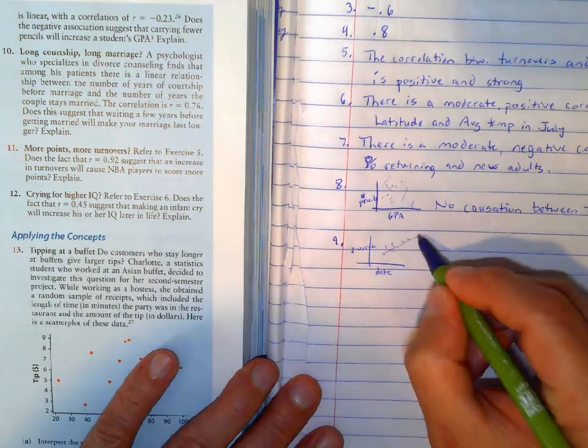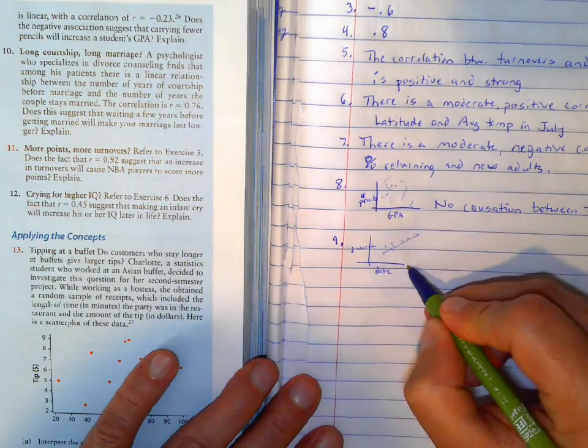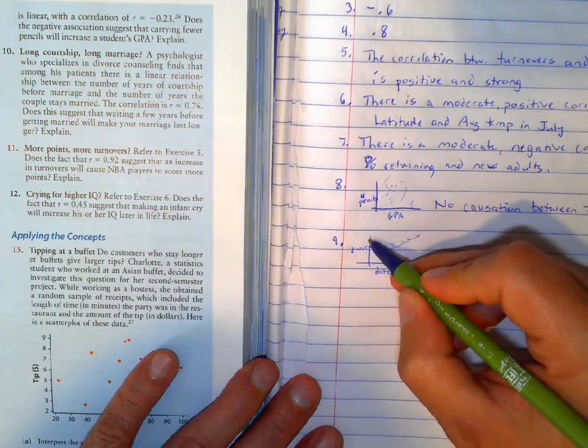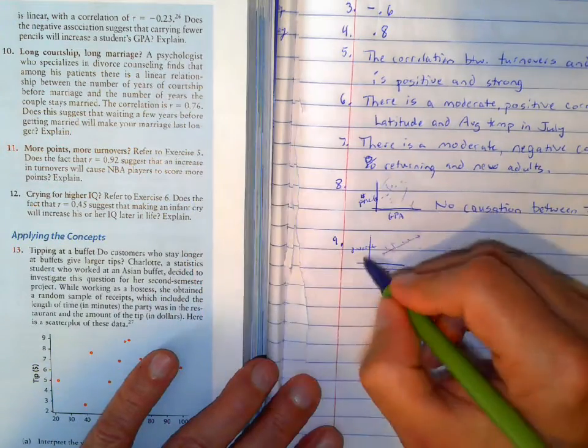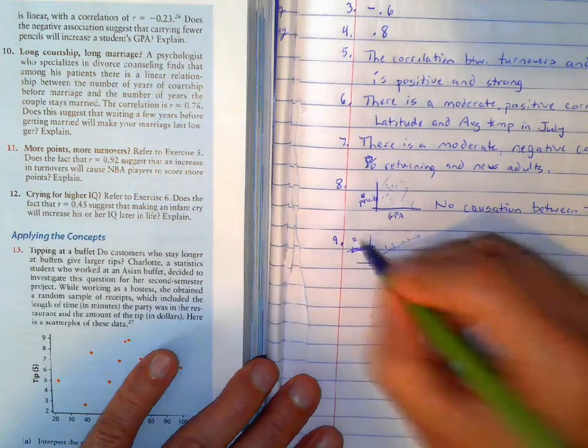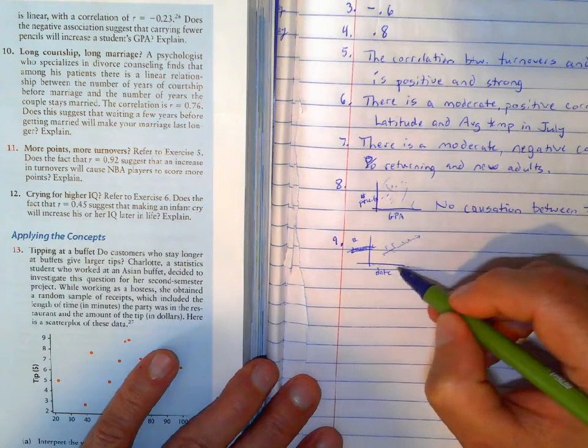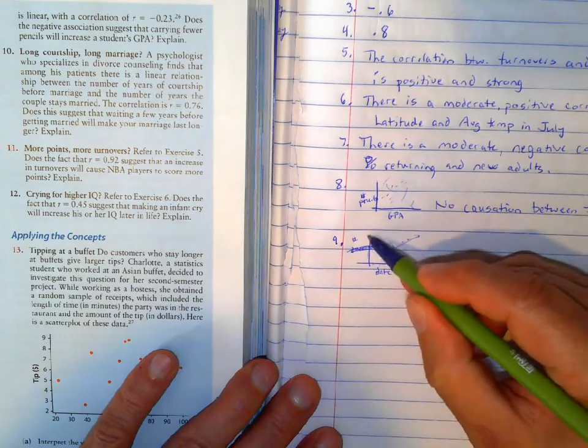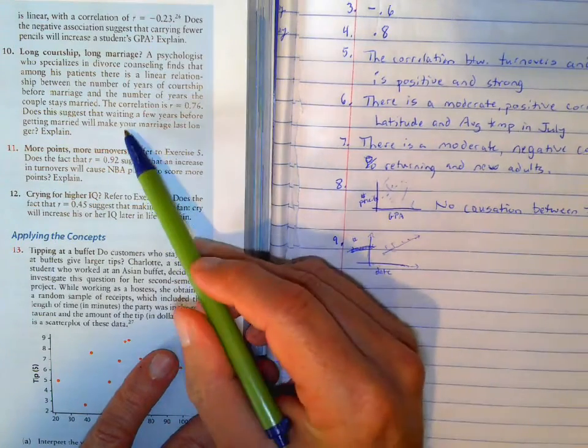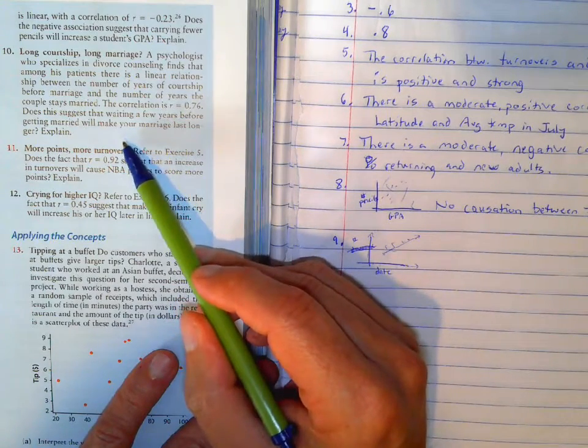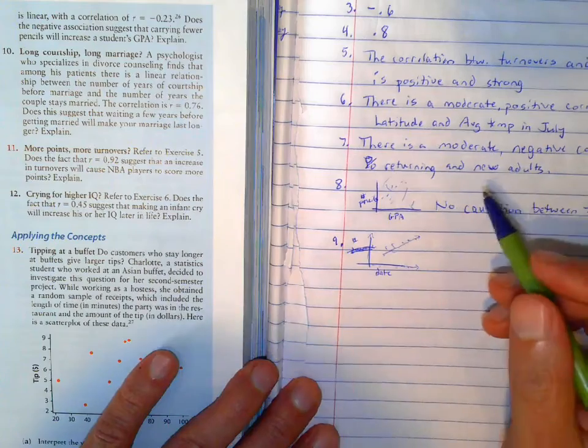So it's a positive correlation, meaning the more, the longer that people have dated, because this is number of years they've been married. So the longer that they date, the longer they stay married, is what this is saying. Does this suggest that waiting a few years before getting married will make your marriage last longer?